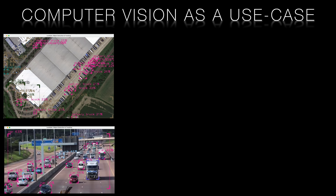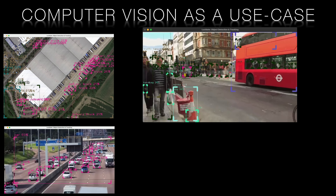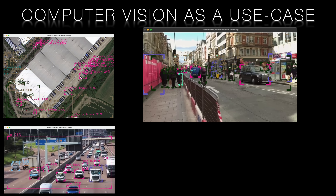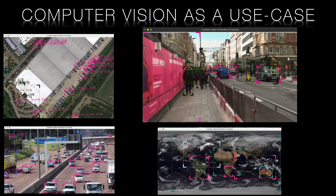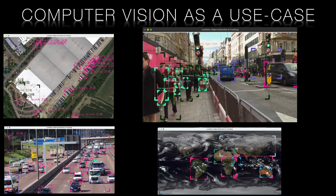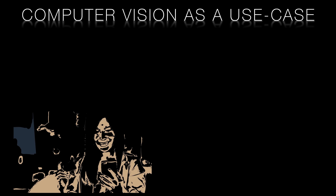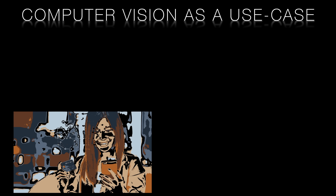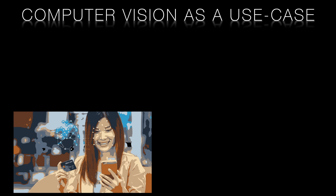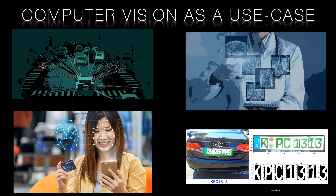Up until now, we've been using computer vision as our use case for neural networks. We've justified this choice as computer vision is a complex problem that has eluded researchers using conventional programming techniques — computer scientists have been unable to solve computer vision challenges using logic and if-then-else statements. But with the advent of neural networks, we've seen an explosion of applications from biometrics, number plate recognition, medical imaging, and driverless cars.